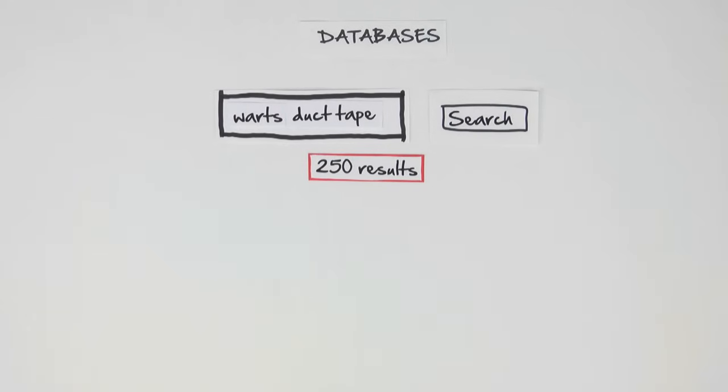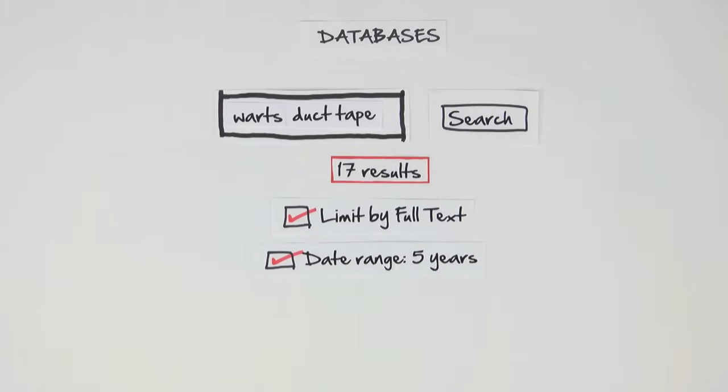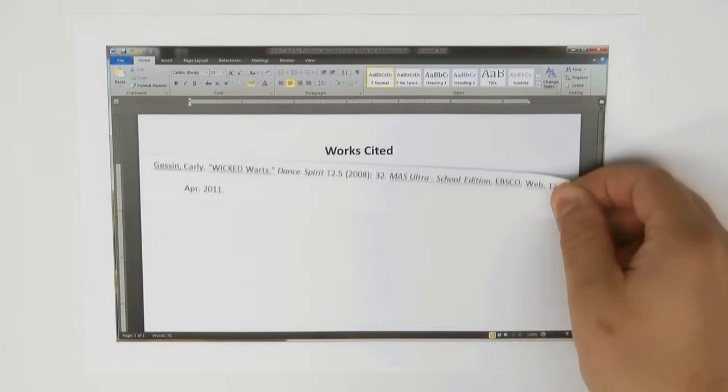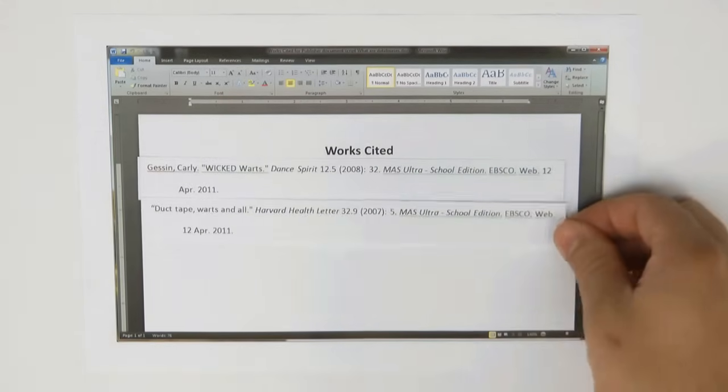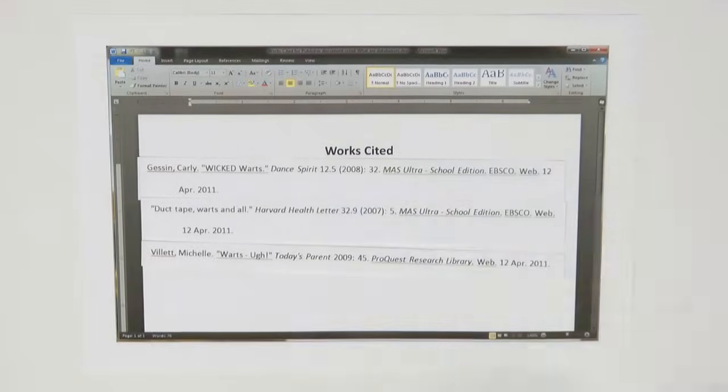Some will suggest additional keywords to use to narrow down your topic. You can further refine your results by limiting to a date range, publication type, and full text. Once you find a worthwhile article, a formatted citation is often available to copy and paste into your paper.